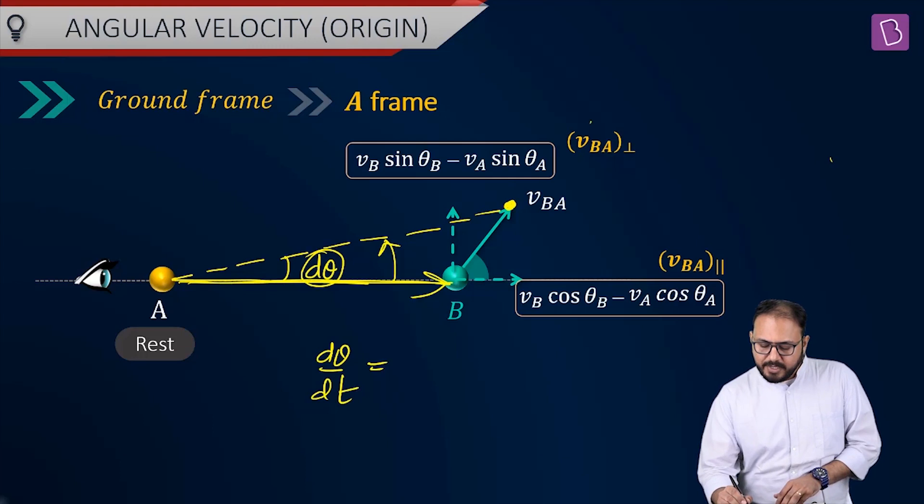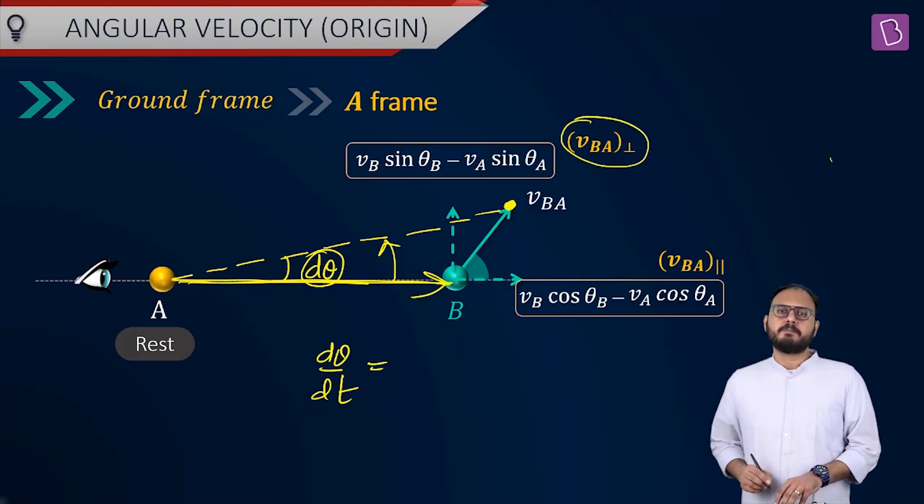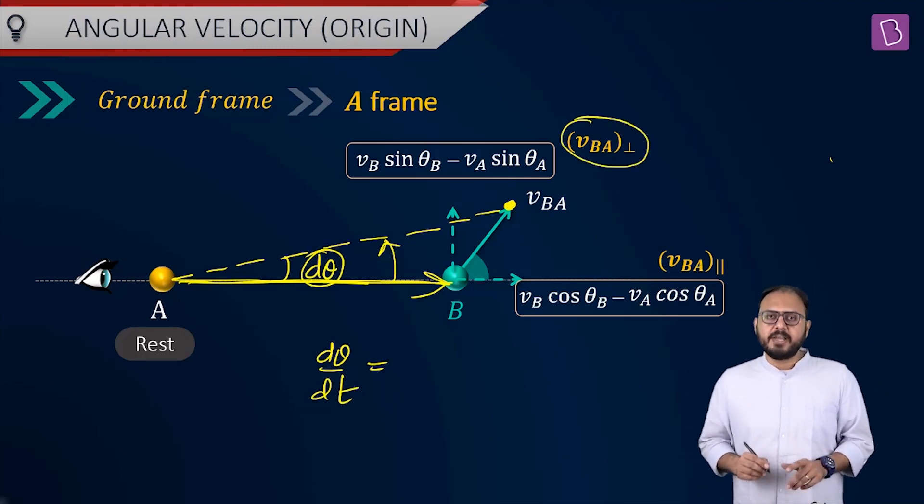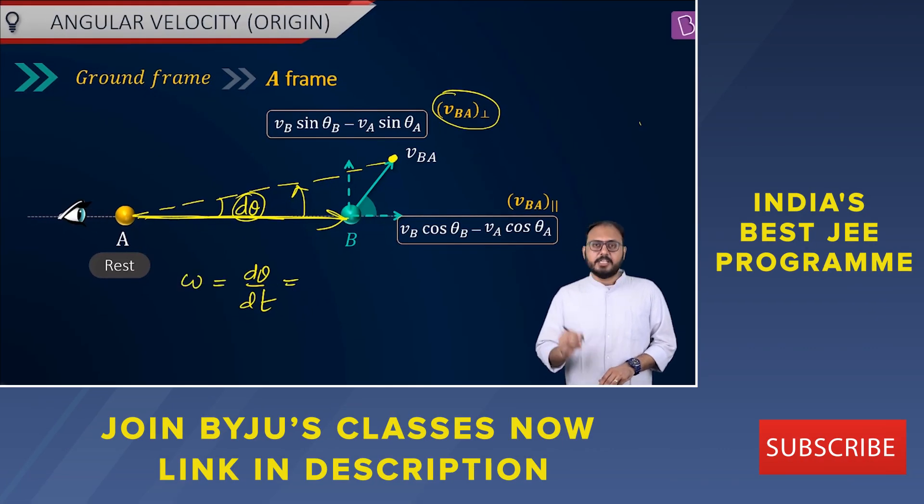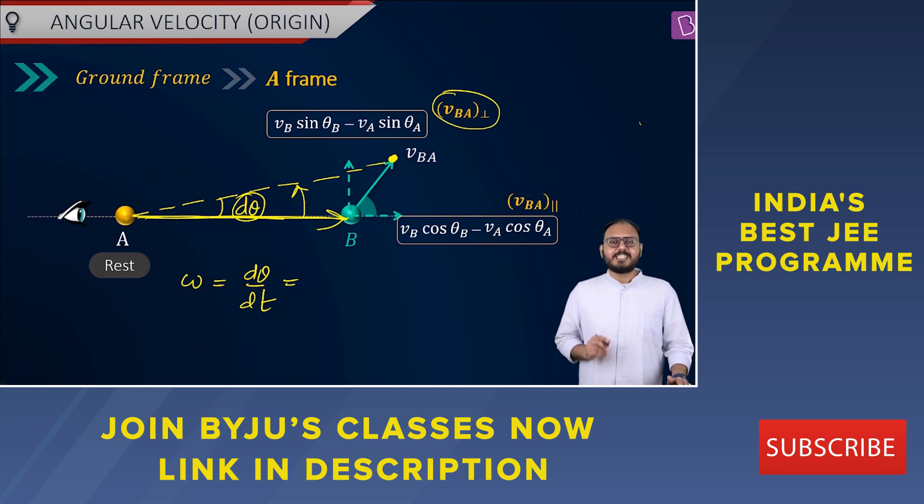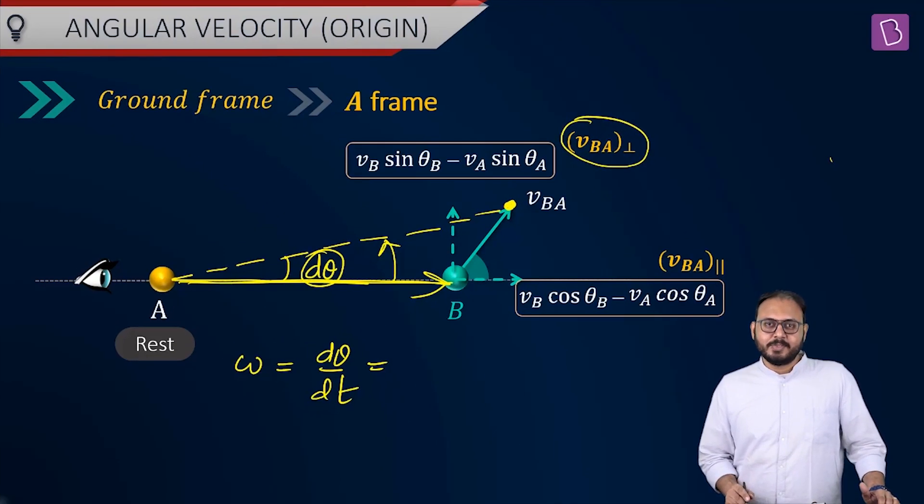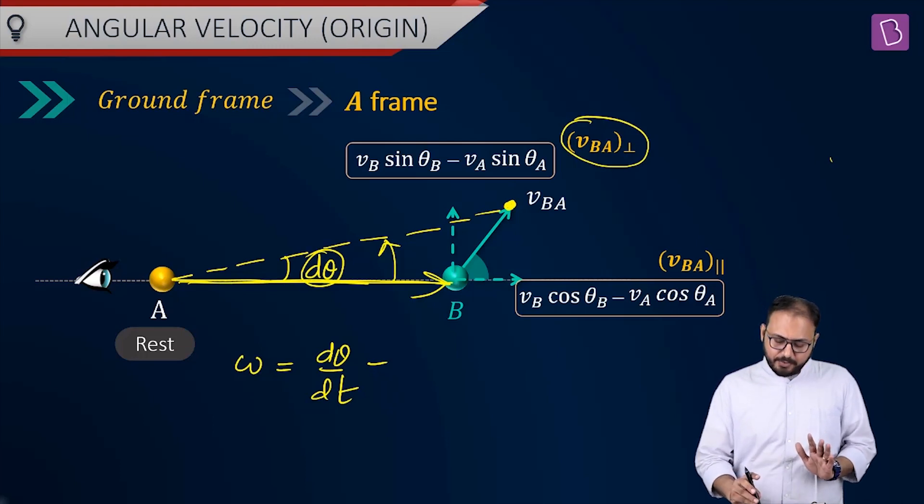Clearly, who is responsible for this d theta by dt? Responsibility is taken by vba perpendicular. Vba perpendicular is the reason why d theta by dt happened. And what is d theta by dt? d theta by dt is omega. Isn't it? So far, I have not dropped any math for you. I am just talking qualitative. Omega. By definition, d theta by dt is omega.